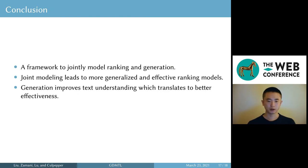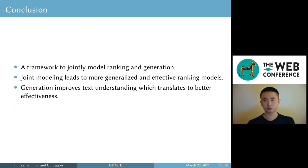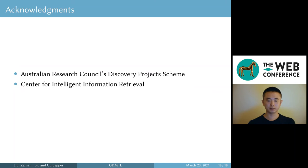To summarize, in this work we proposed a framework to jointly model ranking and generation. Our experiments show that the joint modeling approach leads to more generalized and more effective retrieval models. Our analysis found that generation tasks improve a ranking model's ability to understand more complex query-document relations, which translates to better effectiveness. This work was supported by the Australian Research Council's Discovery Projects and the Center for Intelligent Information Retrieval. Thanks for watching.